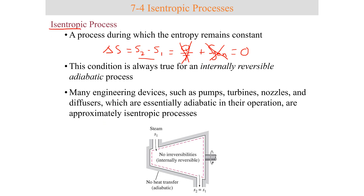That is called a process that is isentropic. Many engineering devices, such as pumps, turbines, nozzles, and diffusers, which are essentially adiabatic in their operation, are approximately isentropic.